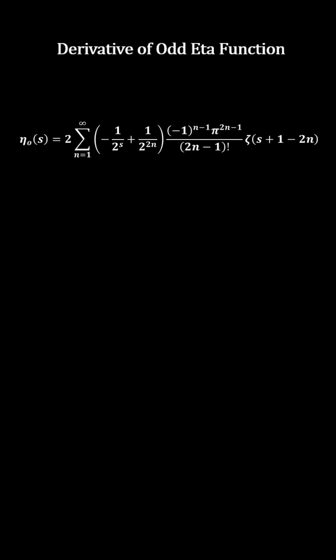The odd eta function, that is the Dirichlet beta function, is the sum of the zeta functions. It can be expressed again as the sum of the eta functions.